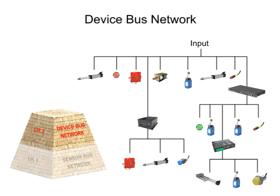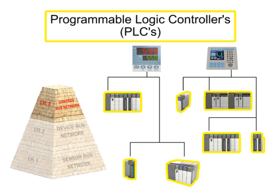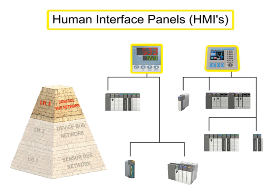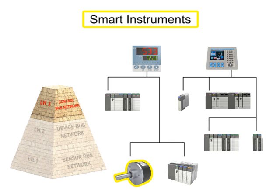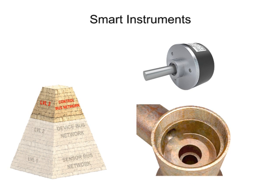Moving up the pyramid, the next increasingly complex level of fieldbus networking is the controlbus network. Controlbus networks are the most advanced networks used on the factory floor and data communication happens at a high level. PLCs or Programmable Logic Controllers are connected to each other alongside HMIs or Human Interface Panels to allow for complete configuration and control of every instrument on the network. Smart instruments capable of performing complex operations can also be connected at this level. For instance, there might be a smart instrument that measures wear and tear on a valve; when the wear reaches a dangerous level, it will signal the controller that the valve needs to be replaced.